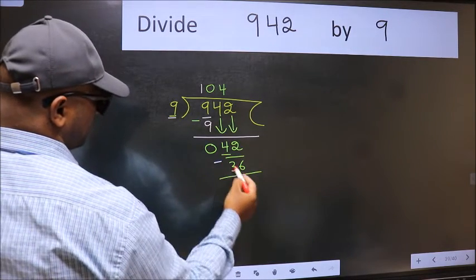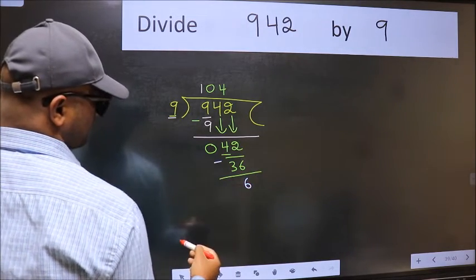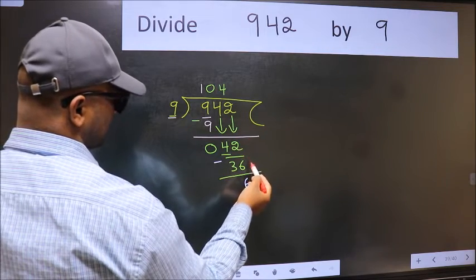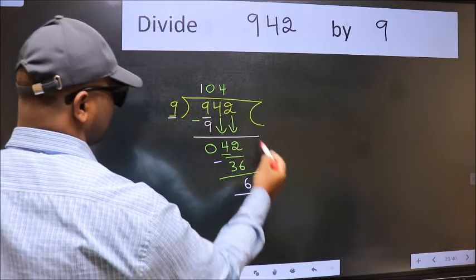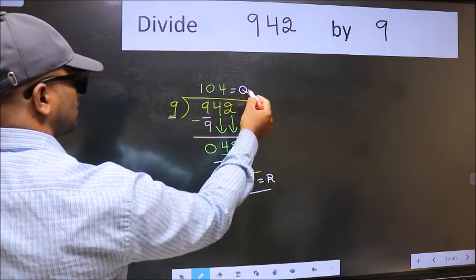Now we should subtract. We get 6. No more numbers to bring down, so we stop here. This is our remainder and this is our quotient.